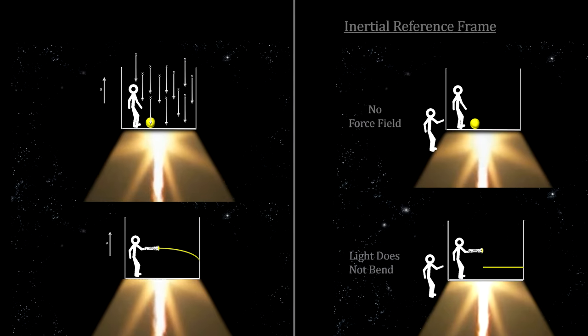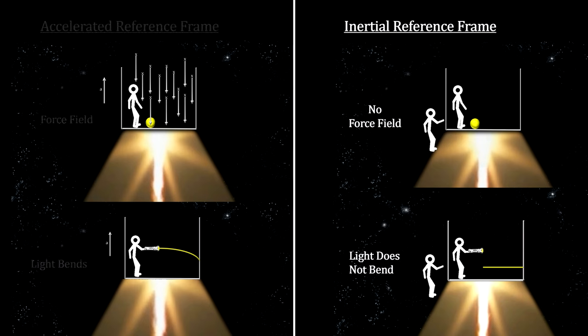Before Einstein's general theory of relativity, we would have said the inertial observer was correct and the person in the elevator was fooled into thinking he is in a gravitational field. But according to general relativity, they are both right in their own reference frame. Gravitational forces have materialized for the person in the elevator due to its accelerated motion.